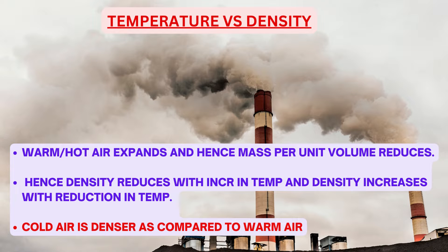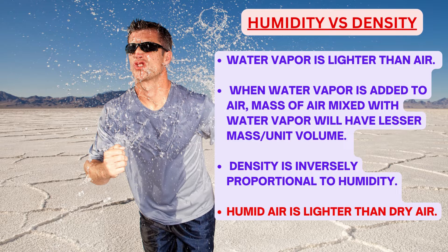Temperature versus density: warm or hot air expands and hence mass per unit volume reduces, so density decreases with increase in temperature, and density increases with reduction in temperature — colder air is denser compared to warmer air. Humidity versus density: water vapor is lighter than air; water molecules are lighter than oxygen or nitrogen. When water vapor is added to air, the mass per unit volume reduces, so density is inversely proportional to humidity — humid air is lighter than dry air.